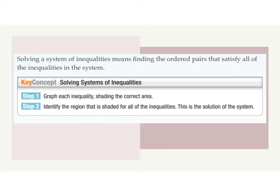Solving a system of inequalities means finding the ordered pairs that satisfy all the inequalities in the system. Step one is to graph each inequality — each system is going to have two graphs. We graph our first equation, then graph our second one. When graphing inequalities we have two shaded regions, and the area that's shaded for both — the overlapping shading — is our final answer.